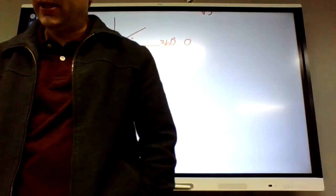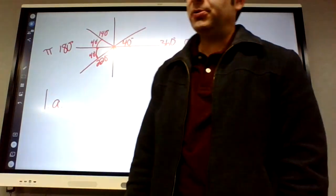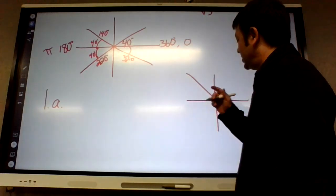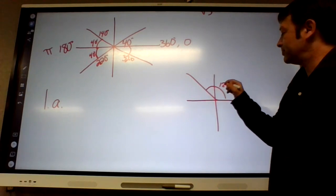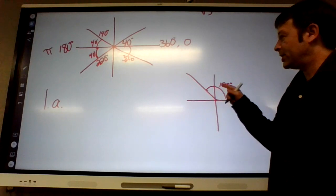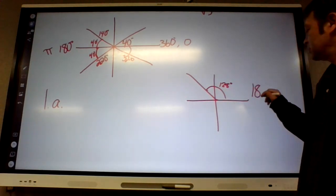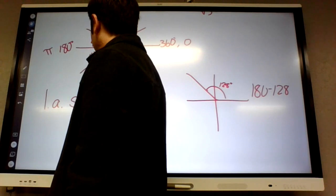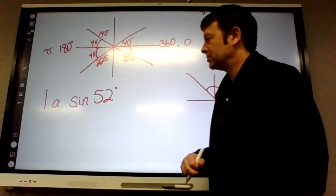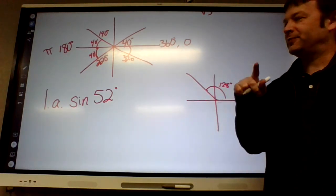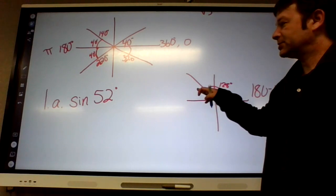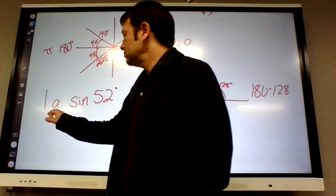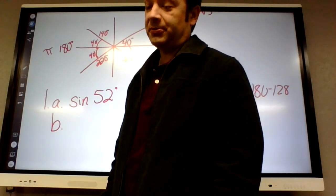Okay, sine of 128. So 128 would be in the second quadrant, right? Somewhere over here. So what is 128's reference angle? You'd have to find the gap between 180 and 128, so you do 180 minus 128, which is 52. So sine of 128 is going to be the same thing as sine of 52 degrees. Okay, is sine positive or negative in the second quadrant? Positive, so we're not going to put a negative.